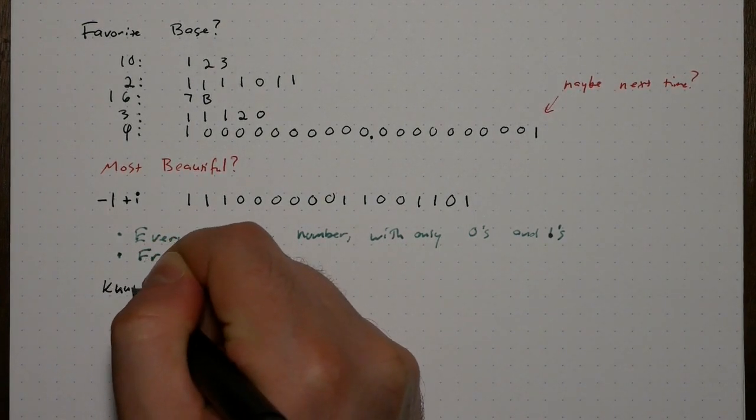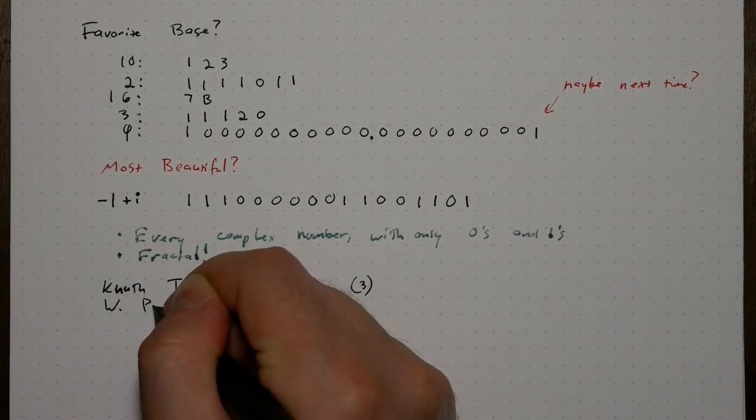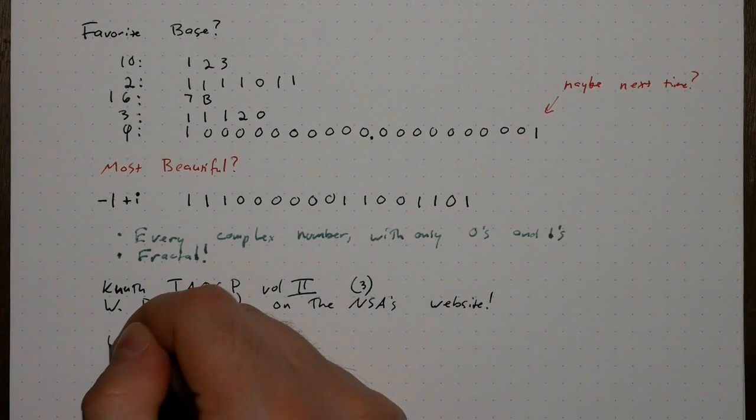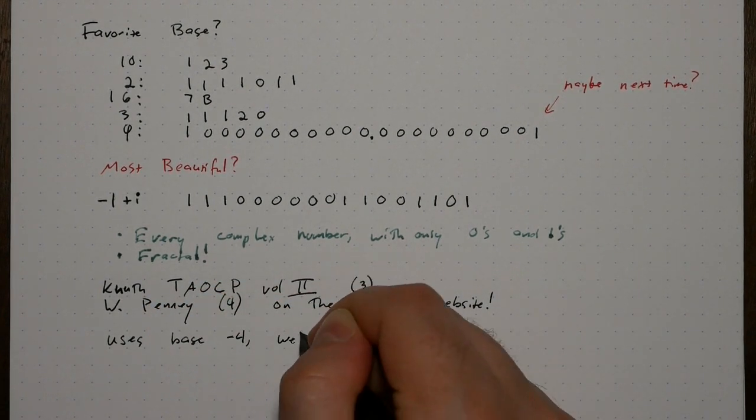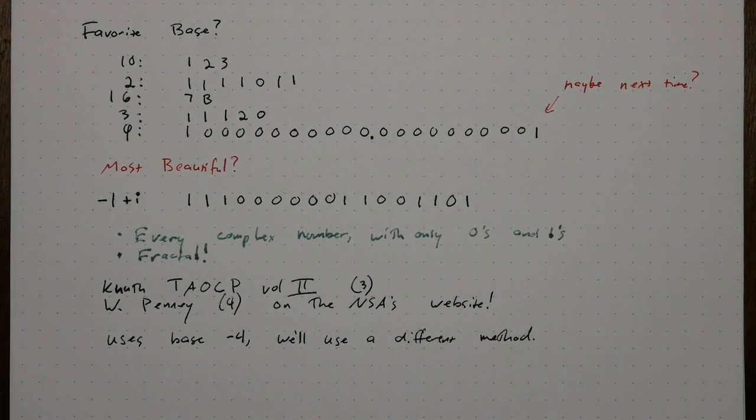I learned about this base in Volume 2 of Knuth's The Art of Computer Programming. He references a paper by Penny, which you can find hosted by the NSA of all places. He uses a few different bases to show that all complex numbers can be represented. We're going to use a different method.